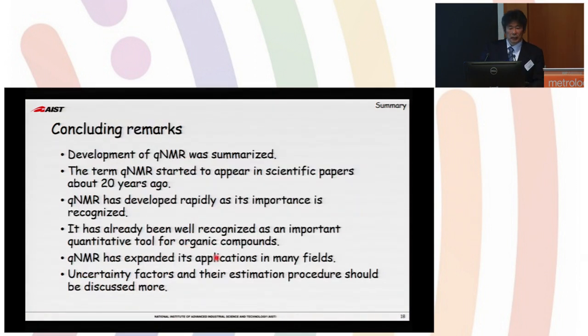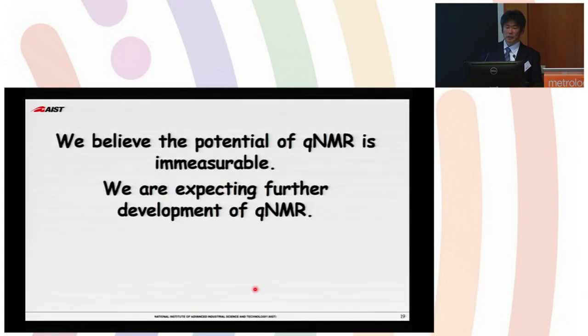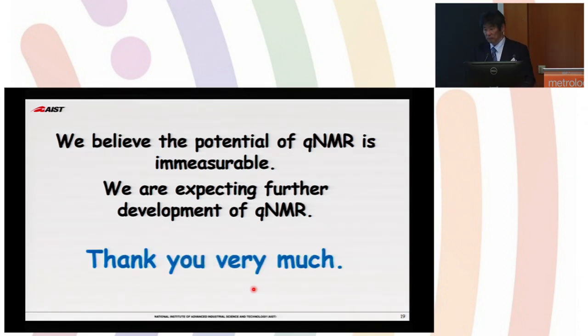Okay, I'll conclude. QNMR was summarized. The term QNMR started to appear about 20 years ago, and QNMR has developed rapidly and its importance is recognized. It has already been recognized as an important quantitative tool for organic compounds. QNMR has expanded its application in many fields and uncertainty factors and their estimations has to be discussed and improved a little more. But we believe the important potential of QNMR is immeasurable. We are expecting further development of QNMR. Thank you very much.